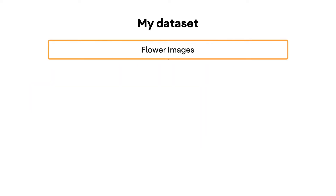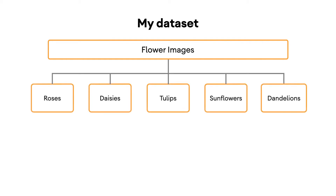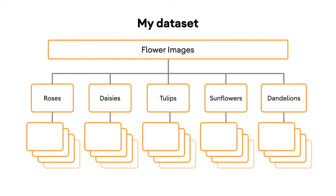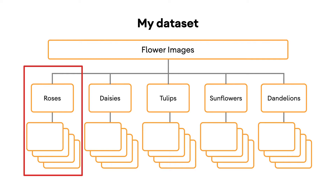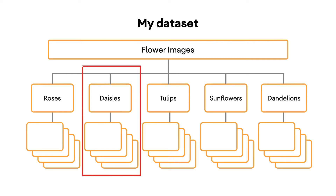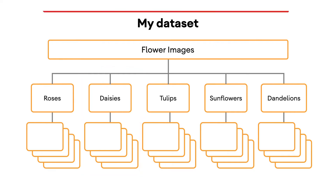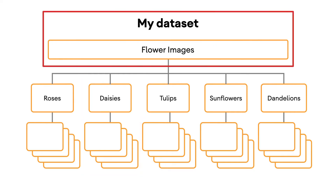The first thing you'll need to do is collect samples of each of the classes that you want to detect. In the Codelab later, I'll provide a dataset with roses, daisies, tulips, sunflowers, and dandelions. Each of these classes are in a folder — all of the roses will be in a folder called roses, all of the daisies in a folder called daisies, and so on. These folders are then zipped up into what we'll call our dataset of flower images.